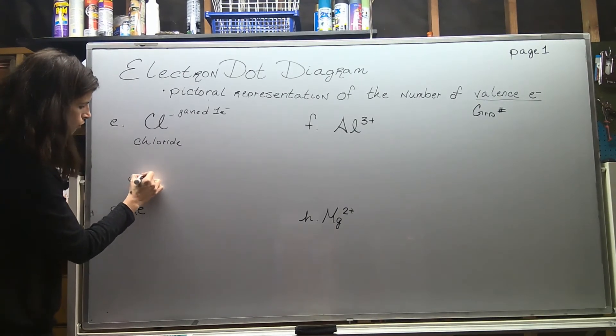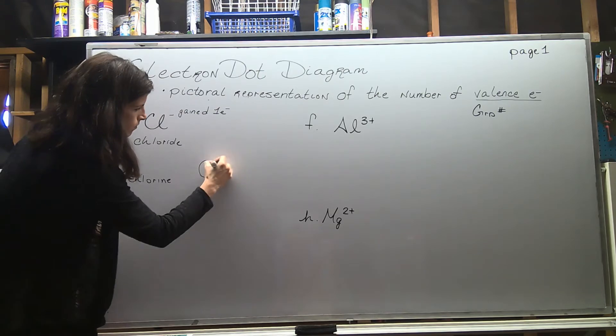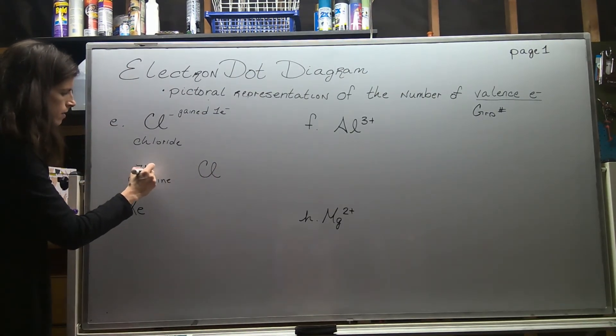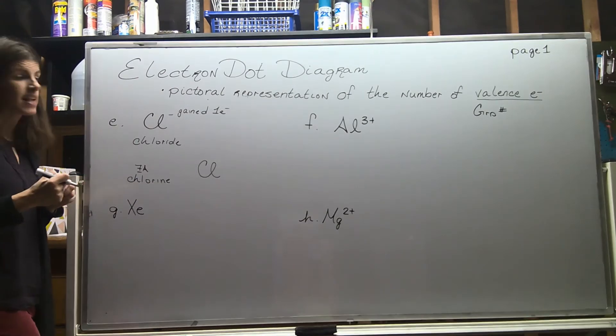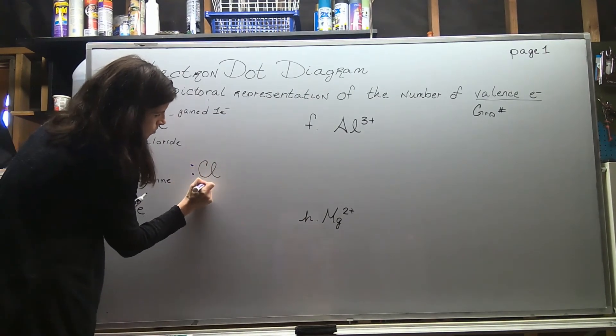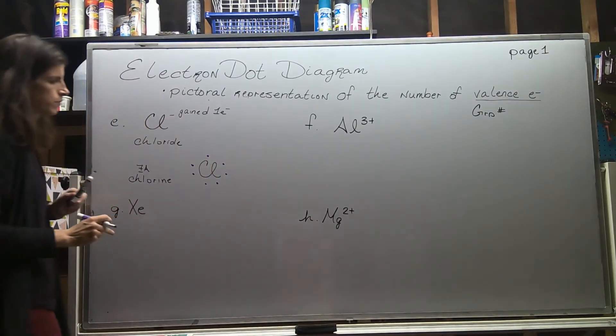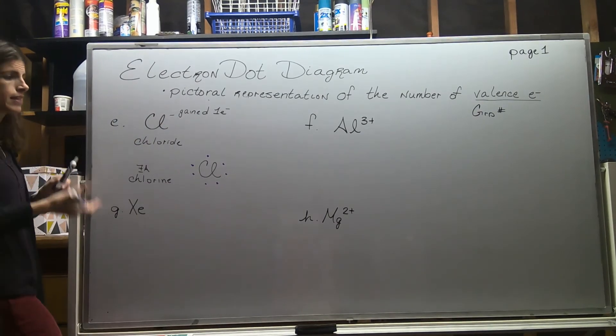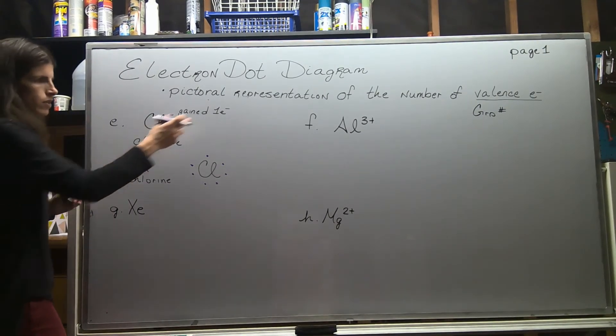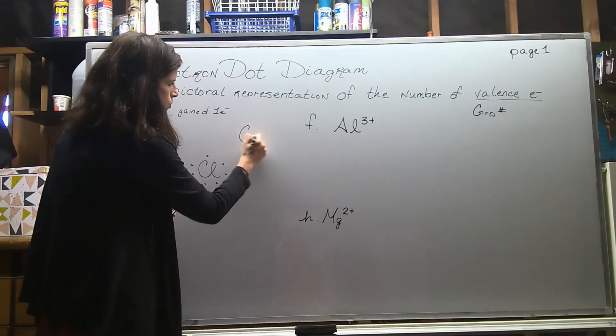If I had asked you about just chlorine, so neutral Cl, you would have told me, well, it's in group 7A, so that means it has seven valence electrons. We'll do one, two, three, four, five, six, seven. But since it gained one to become chloride, now we're looking at seven plus one or eight valence electrons. So I'm going to do Cl and I'm going to put eight dots around it representing those eight electrons.